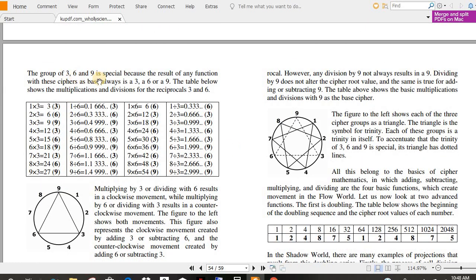The group of three, six, nine is special because the results of any function with these ciphers as base always is a three, a six, or a nine. The table below shows the multiplications and divisions for the reciprocals three and six. So, one through nine, one times three, two times three, three times three, see? Three, six, nine. And same here. It's just amazing.